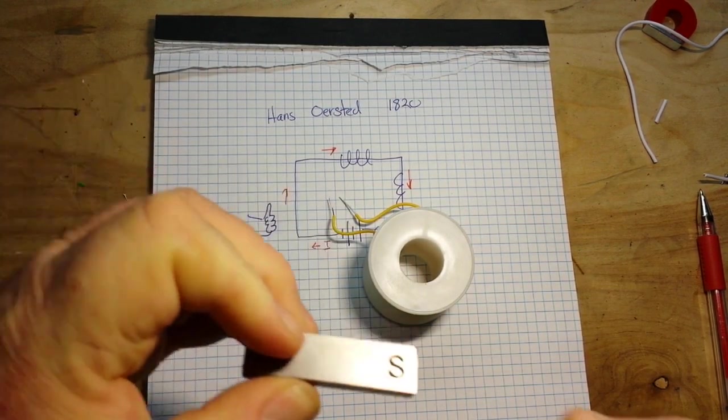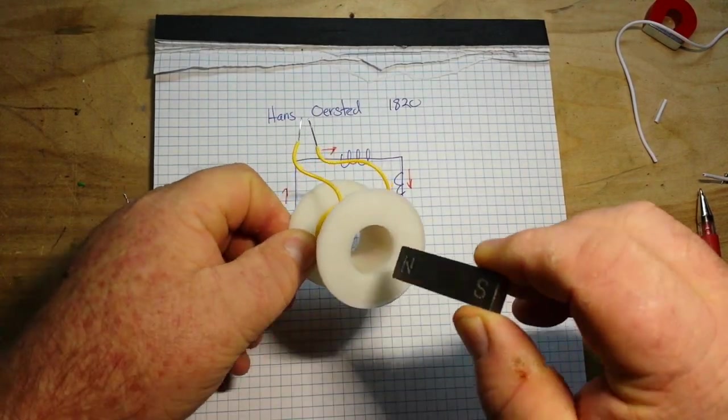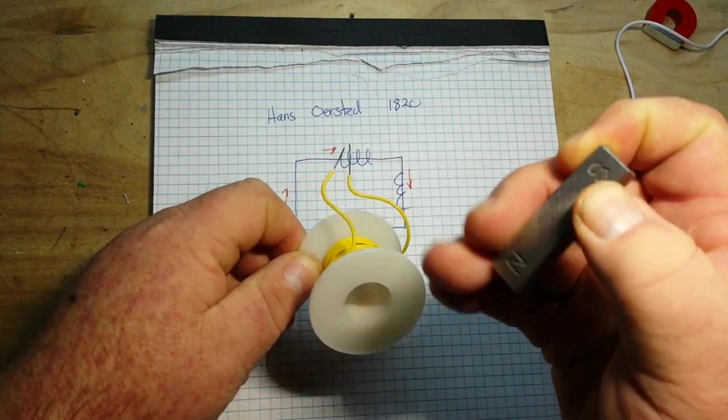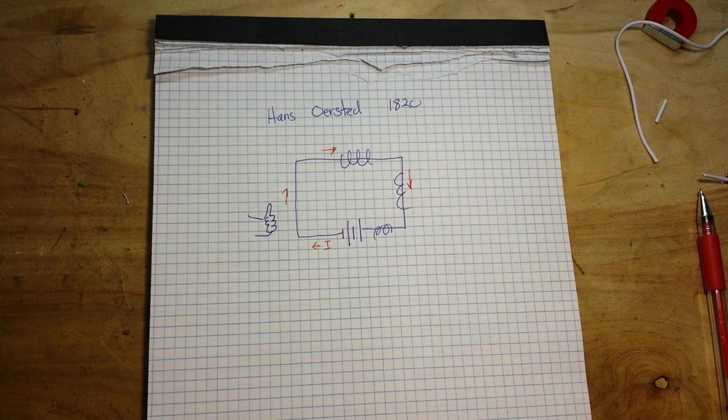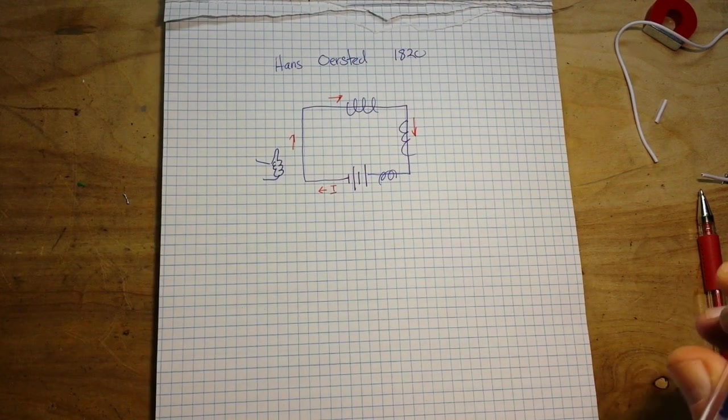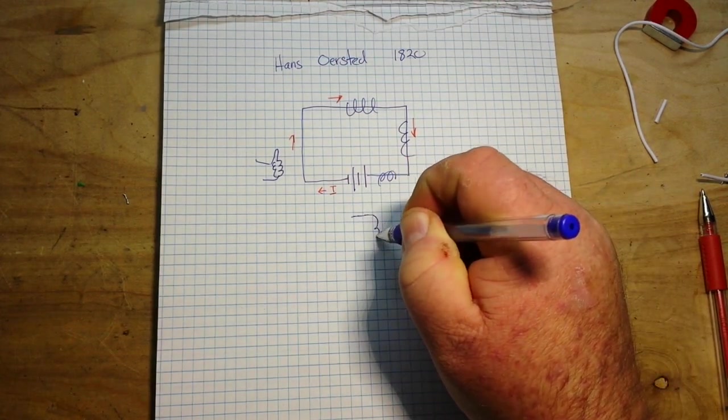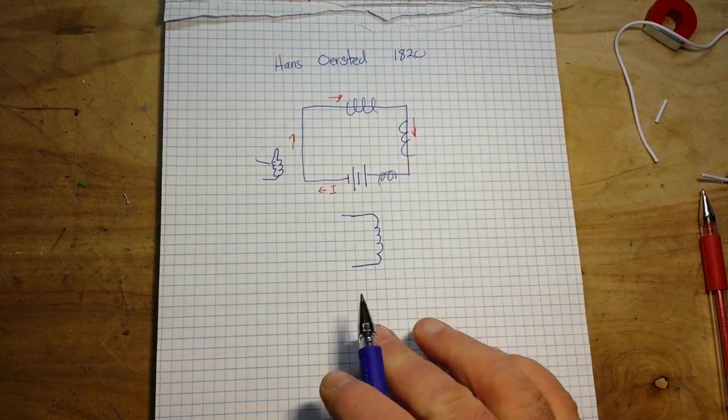So in the last video we used a coil of wire and a bar magnet and we showed using the galvanometer that by passing the bar magnet through the coil we were able to create an electromagnetic field there, and thus I showed you how the first electromagnetic motor was constructed.